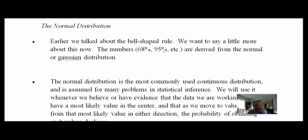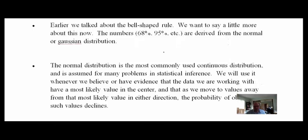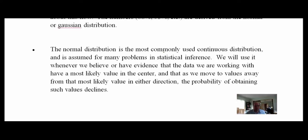Now we're going to take a different look and say: what's the probability of some event happening in a normal distribution that's smaller than a certain value — all the way from negative infinity to our point. The normal distribution is one of the most commonly used continuous distributions.